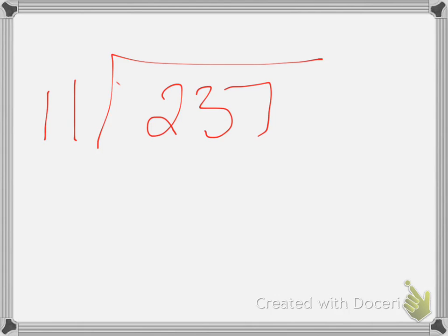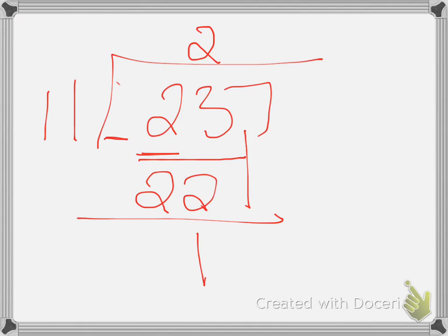We had 237 divided by 11. So first you have to ask yourself, how many times does 11 go into 2? It can't. So then you have to look at how many times does 11 go into 23? I know it goes in twice because 2 times 11 is 22. So then I'm going to write that 22, and I'm going to subtract, and I have 1 left over, and I bring down the 7.